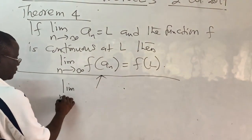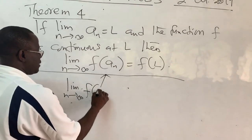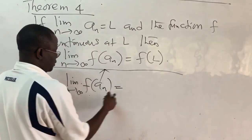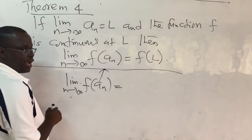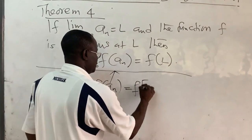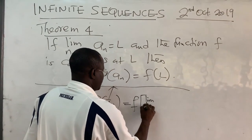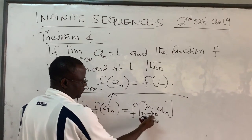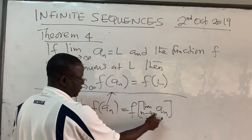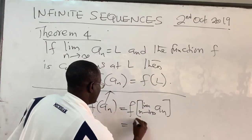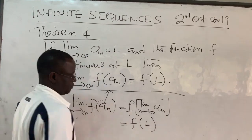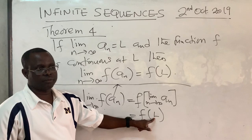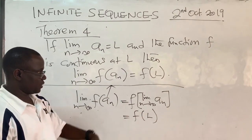So this means you can write: limit as n goes to infinity of f(aₙ) equals f(limit as n goes to infinity of aₙ), which equals f(L), because the function is continuous at the number L. That's what this theorem says — you can take the limit into the argument of the function.